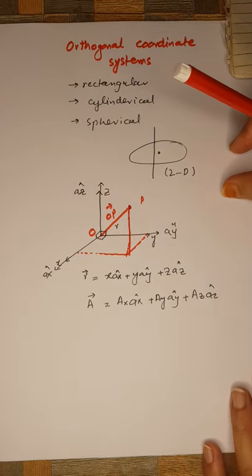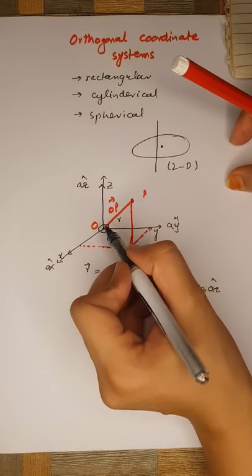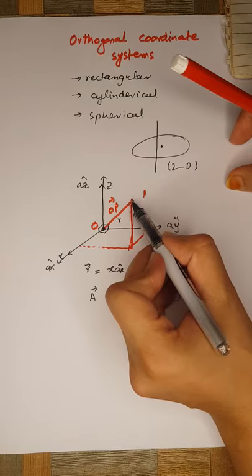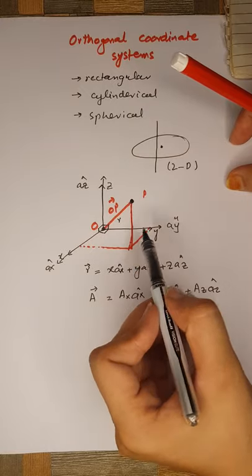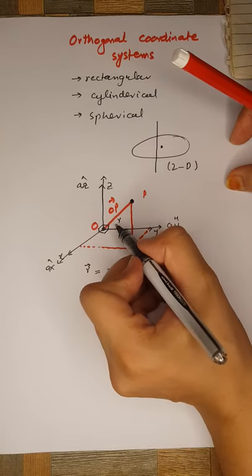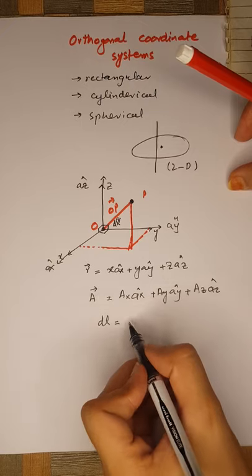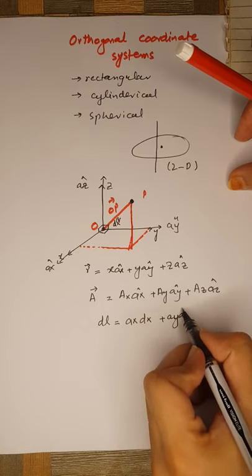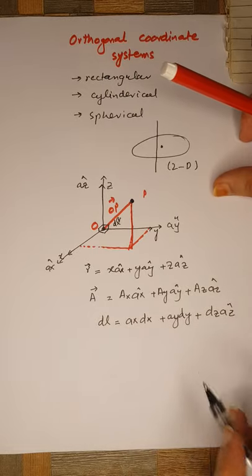Now let's study the differential length. If a point placed at the origin is displaced from the origin to a certain point in the space formed by the x, y, and z axes, this length is called the differential length. The differential length dl is equal to âx·dx + ây·dy + âz·dz.